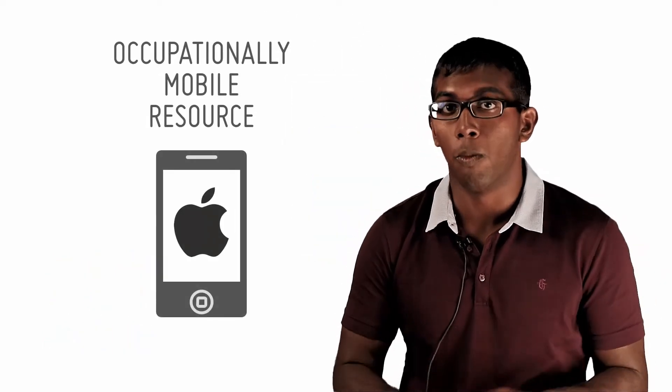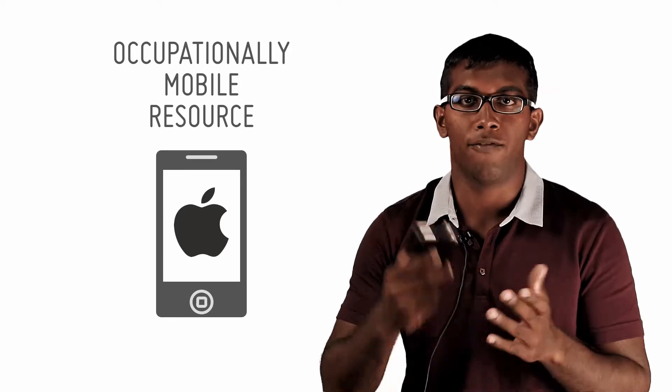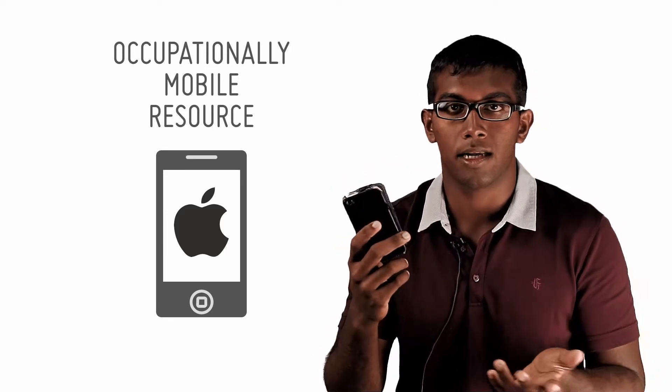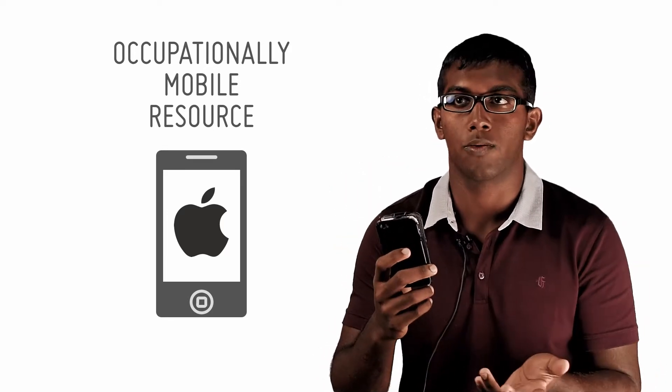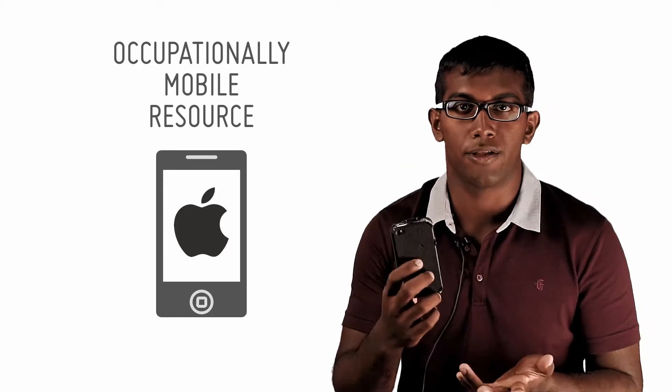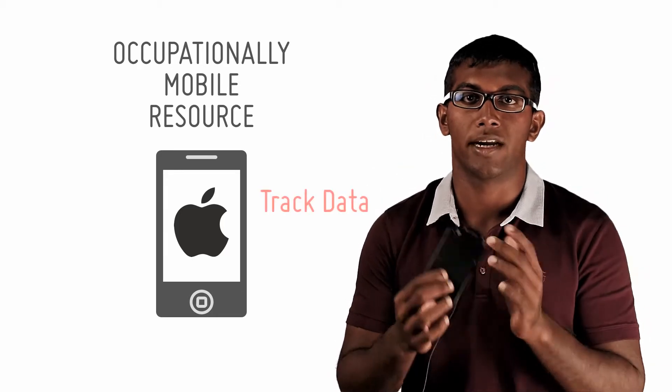An example of an occupationally mobile resource is the iPhone. Or you can take any other technological device, for example, a computer as well. Because the iPhone can be used in various industries. It can be used to track data.